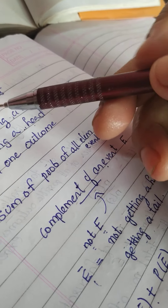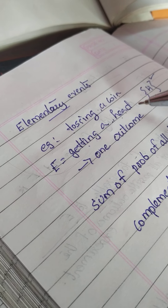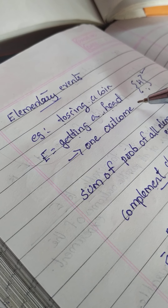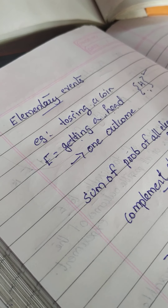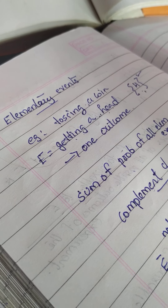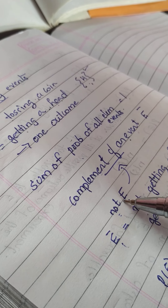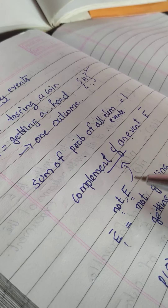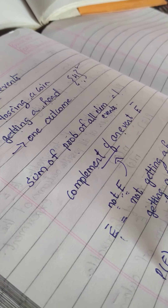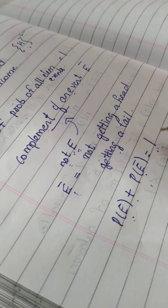Let me repeat all the conditions. First, an event is called an elementary event if it has only one outcome. Second, the sum of probabilities of all elementary events is one. Third, not-E means the complement of an event. And fourth, P(E) plus P(E-bar) is equal to one.